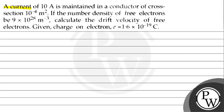The question says that a current of 10 ampere is maintained in a conductor of cross section 10 to the power minus 4 meter square. The number density of free electrons is 9 into 10 to the power 28 per meter cube. Calculate the drift velocity of free electrons. Given: charge on electron equals 1.6 into 10 to the power minus 19 coulomb.